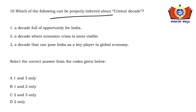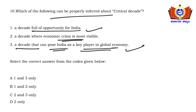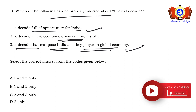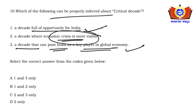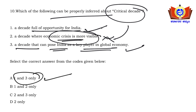Question: Which of the following can be properly inferred about the 'critical decade'? Option A: a decade full of opportunity for India — yes. Option B: a decade where economic crisis is more visible — not the most probable. Option C: a decade that can pose India as a key player in the global economy — yes, supported in the second part of the passage. So options 1 and 3 are correct — option A is the right answer.